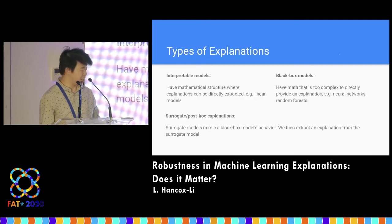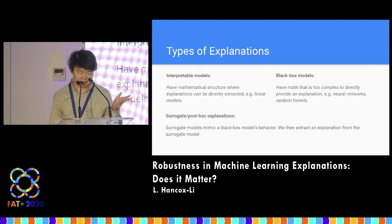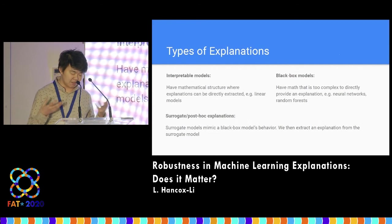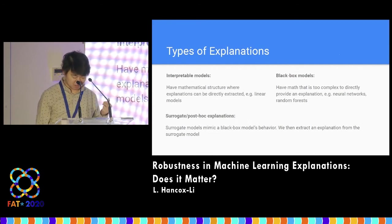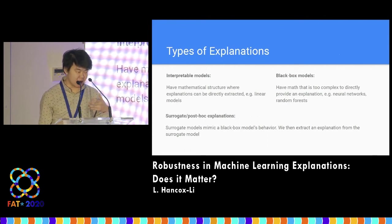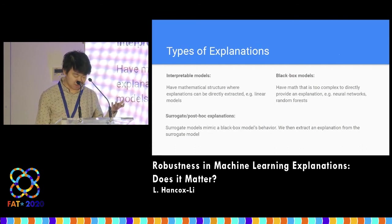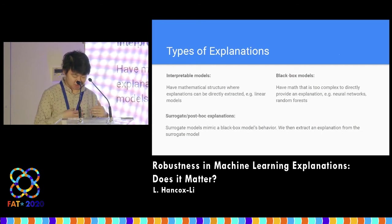I have a slide on types of explanations I'll go through briefly. When I say interpretable models, I'm talking about models that have inherently interpretable math — for example, linear models, where it's easy to extract the relevant features and their effect on results. A black box model is one that's not interpretable. Post hoc or surrogate explanations are models that mimic a black box model's behavior but are interpretable, so you can extract an explanation from the post hoc model.